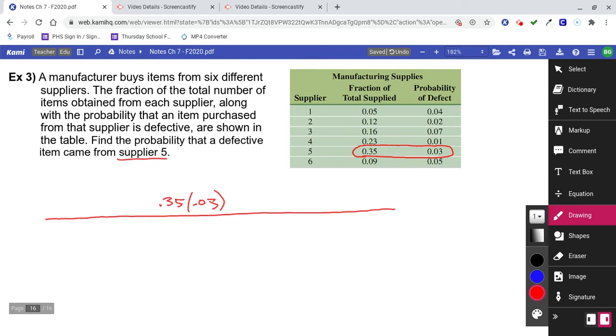So they're going to have 0.05 times 0.04 plus 0.12 times 0.02 plus 0.16 times 0.07 plus 0.23 times 0.01 plus 0.35 times 0.03 plus 0.09 times 0.05.